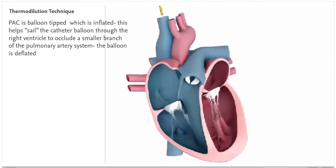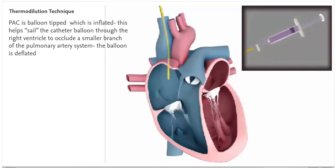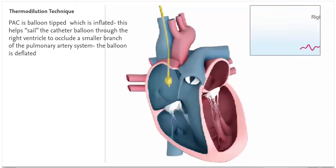PAC is balloon tipped which is inflated. This helps sail the catheter balloon through the right ventricle to occlude a smaller branch of the pulmonary artery system.